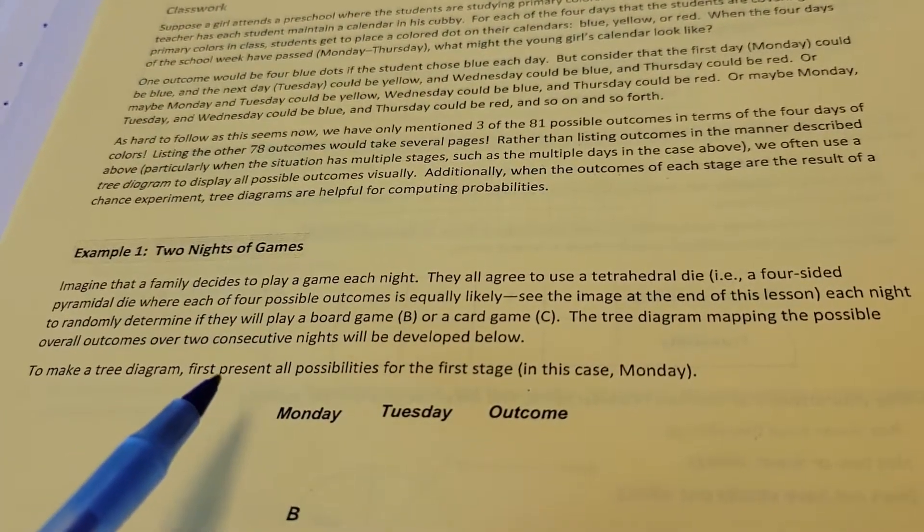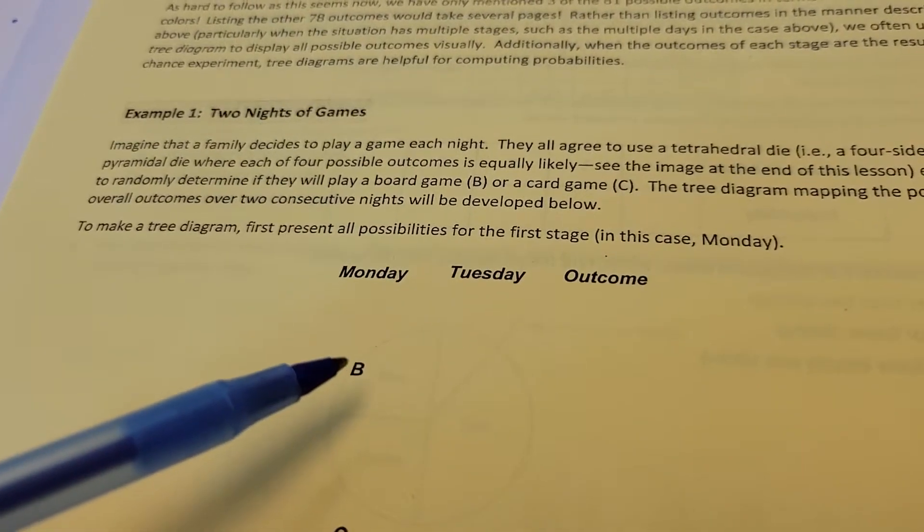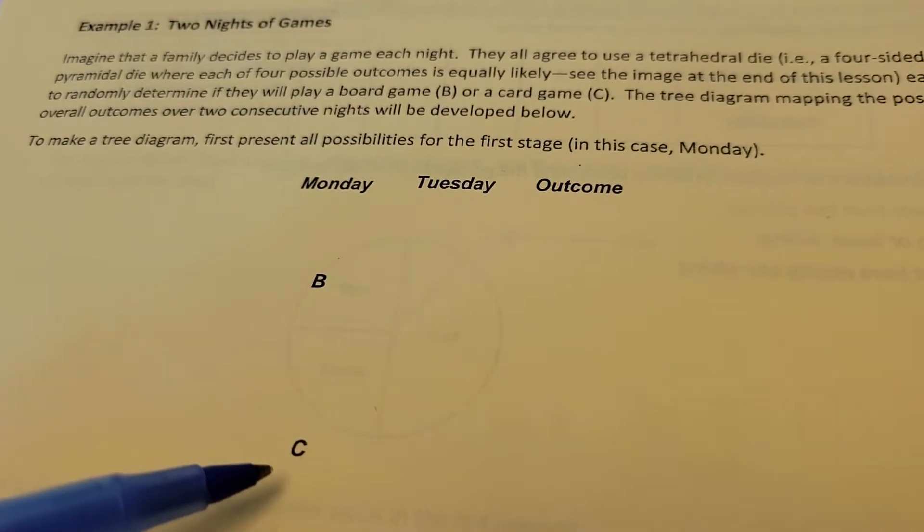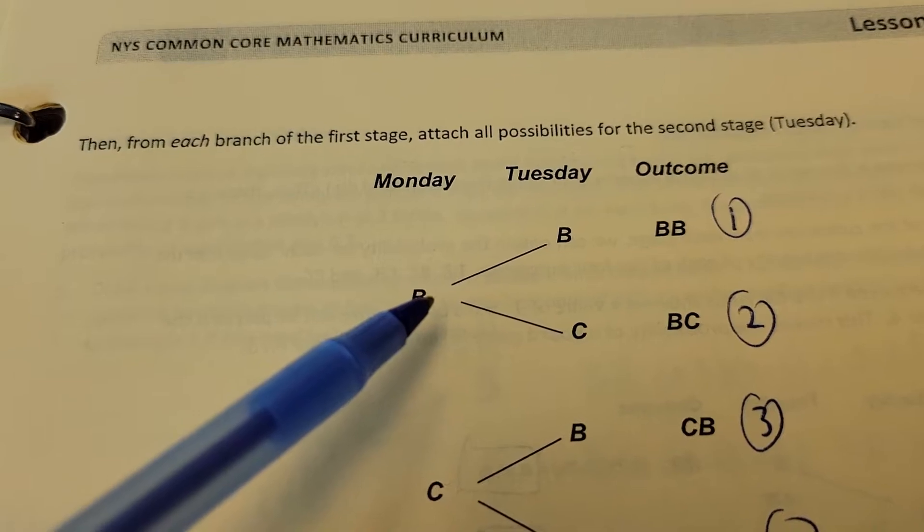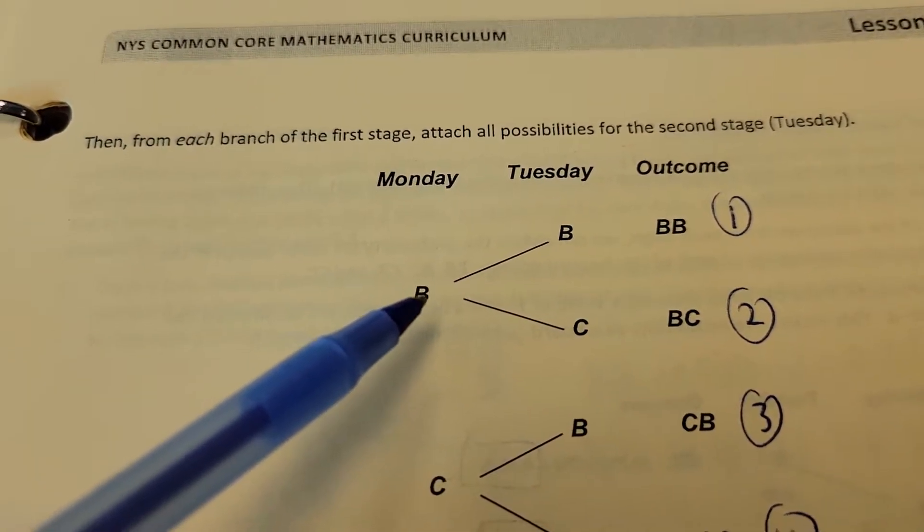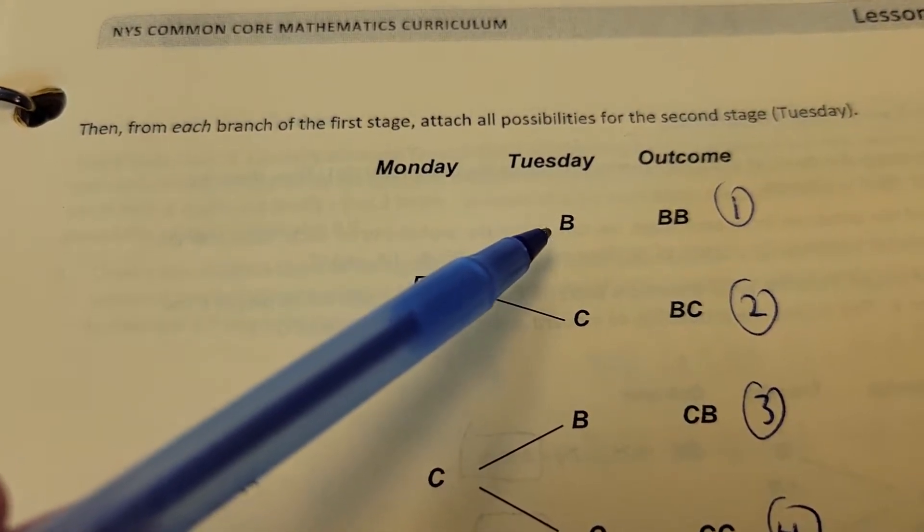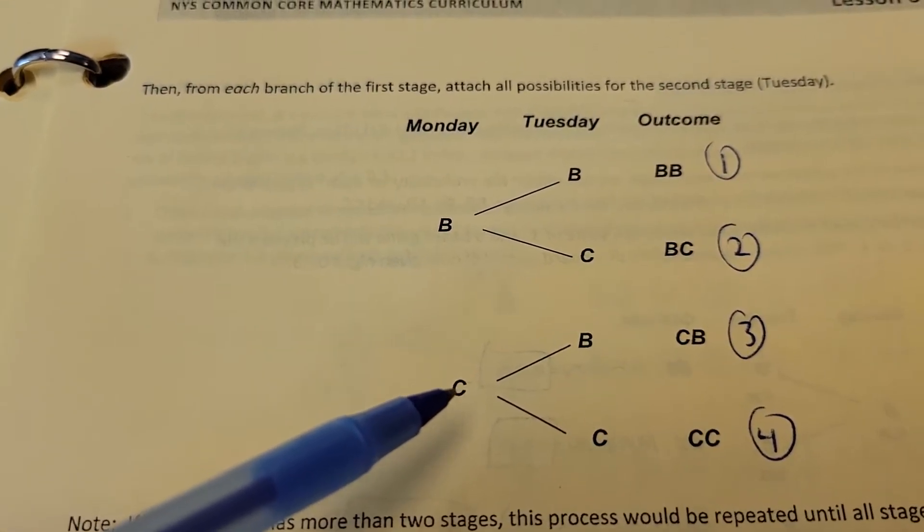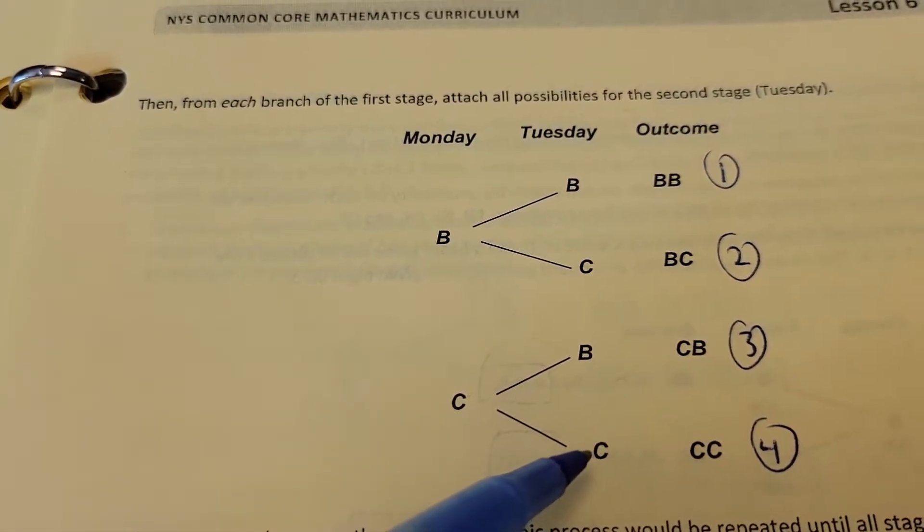Each night to randomly determine if they're going to play a board game, which we'll call B, or a card game, C. The tree diagram mapping the possible overall outcomes over two consecutive nights will be developed below. To make a tree diagram, first present all possibilities for the first stage on Monday. Well, on Monday you can get a board game or a card game. Then from each branch of the first stage, attach all the possibilities to the second stage.